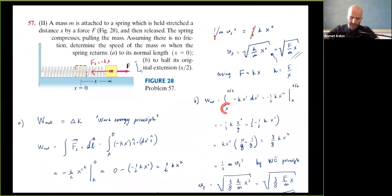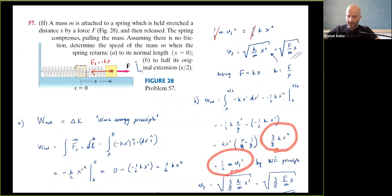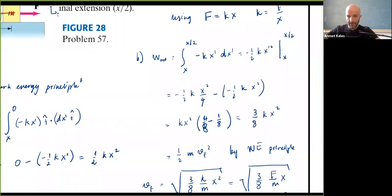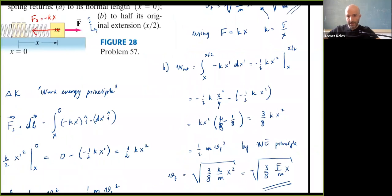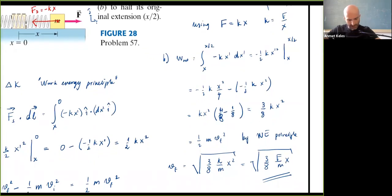It goes from x down to x/2, the total work done on the mass equals the final kinetic energy. I got 3/8 — wait, someone says 3/4? Oh, I forgot the ½ factor. Yes, thank you — with the correction it works out correctly.